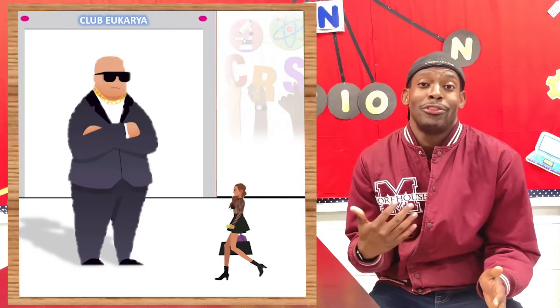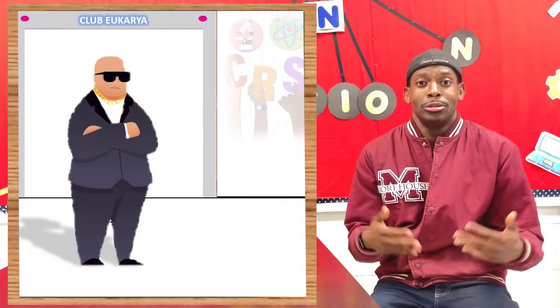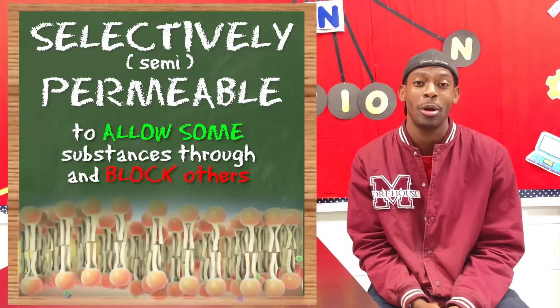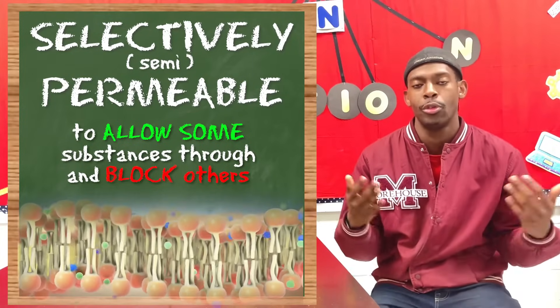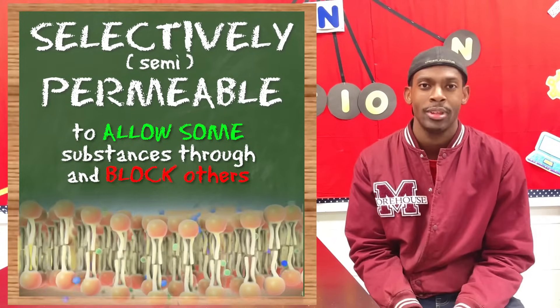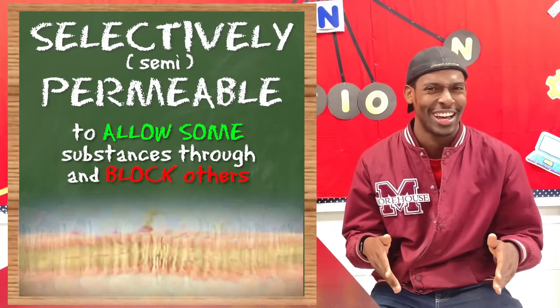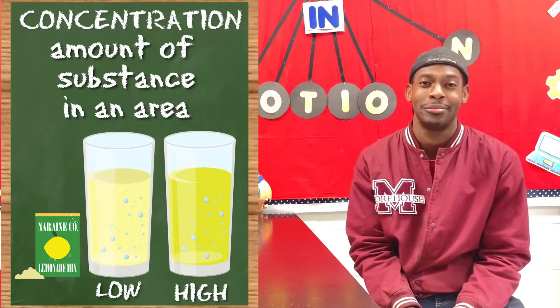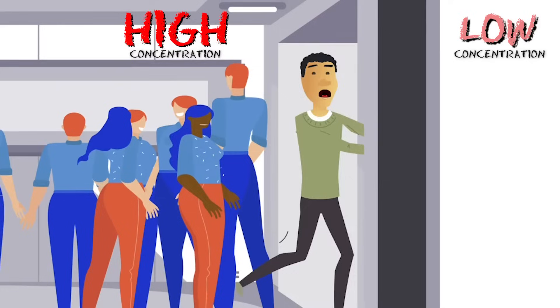It thinks it's very fancy and picky and choosy, but some things get by. We call this being selectively permeable. None of these can just go through however and whenever they want to. It depends on what's already inside or outside. This is called concentration. Have you ever been in a crowded elevator just dying to get off?